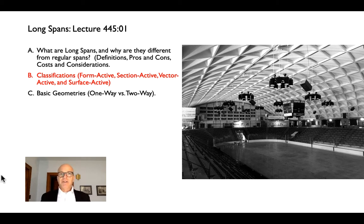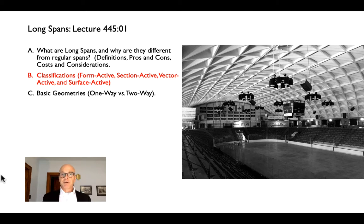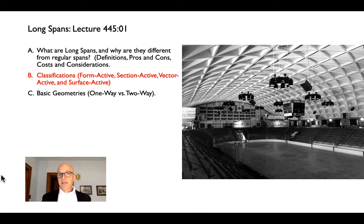Today we'll get into classifications — our four structural classifications that we've used to talk about things like beams and roofs — and we'll look at what happens when we push those systems into long span territory. Same definitions as before: form active, section active, vector active, and surface active. We'll also look at the difference between what we call a one-way system and a two-way system, and when we use one or the other.